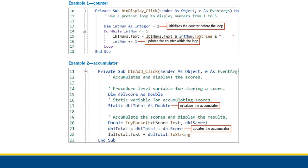What I have here are two examples — one is of a counter, and the other is of an accumulator. With a counter, we are initializing it before the loop. This is actually the code we were working with before, where we count up different numbers and put those numbers inside of a label. So we have a counter starting at one. We declare it as an integer and set it equal to one before the loop, because we initialize all of our variables at the top of our procedures. Then inside of the loop, we update it as needed — in this case, at the end of the loop after we've successfully stored the previous number in the label.